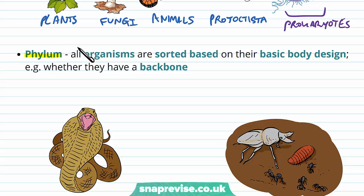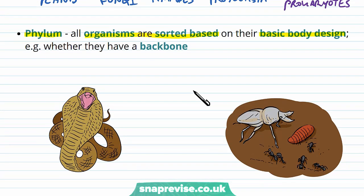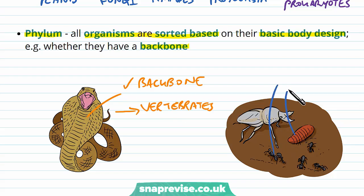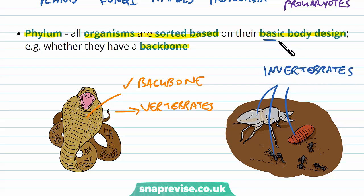We then choose the right phylum. Organisms here get grouped based on certain basic body designs, for example whether they have a backbone. Snakes do have a backbone, so we class them in a phylum called vertebrates. Whereas certain insects like ants, millipedes, and beetles don't have a backbone, so we class them as invertebrates. There are other physical body designs that can group organisms into phyla.